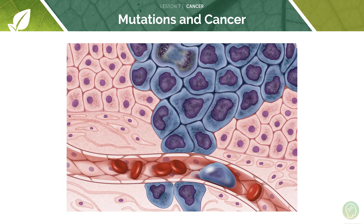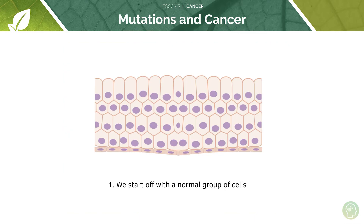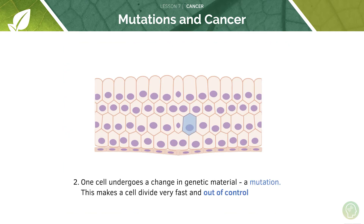So first of all, let's talk a little bit about cancer. We learned in a previous tutorial that our body is made up of cells, many of which are specialised to perform a similar function and form tissue. Tissues come together to form organs, and organs come together to form organ systems. Cells are your basic structural unit, and one cell may undergo a change in genetic material — a genetic mutation — which may encode for the cell to divide very fast and out of control.